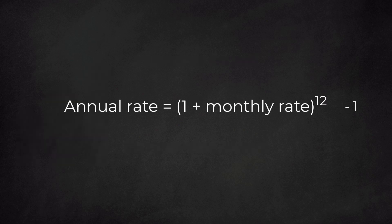The formula is simple. We take 1 plus the monthly rate and raise this to the power of 12. Notice that 12 equals the number of months in a year. Since we added 1, we need to subtract 1 again.